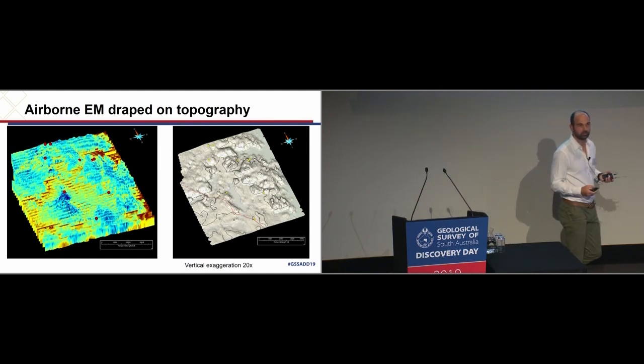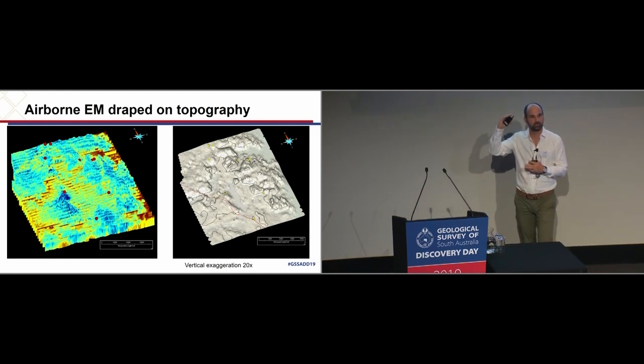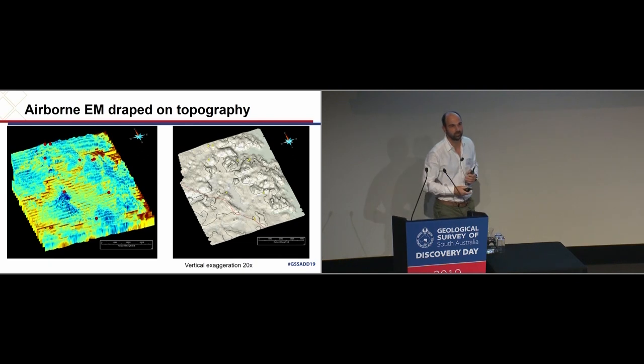I want to finish off by showing where we take the seamless EM dataset up to the surface by showing some of the airborne EM. This is the airborne EM that's draped on topography here. This gives you an indication of the data. If you start with the image on the right, the elevation is exaggerated by about 20 times just to give you a better feel for the topography in the area.